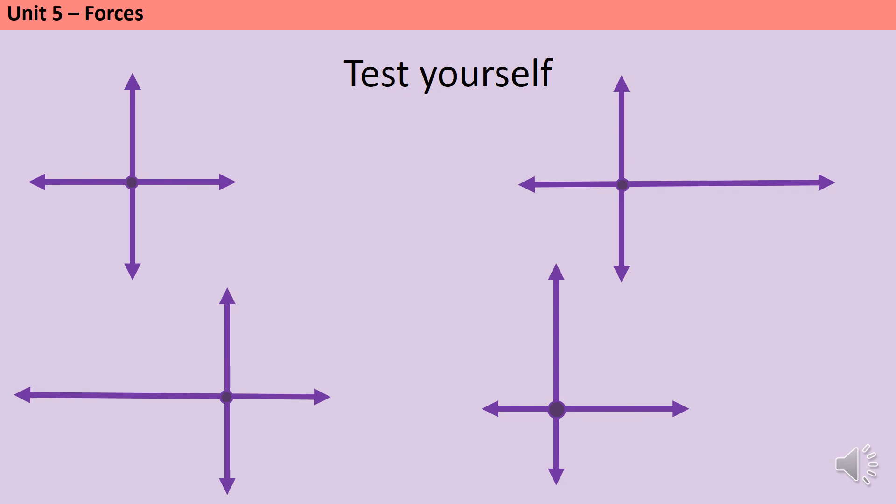To check you understand, here are four more objects for us to analyze. This time, before we apply the forces shown by the free body diagram, they all have a constant velocity. They're all moving at five metres a second to the right. Then they experience all of the forces shown by the free body diagram simultaneously. Pause the video and write down what you think is going to happen to the motion of each object.